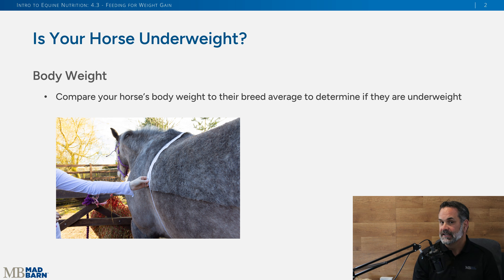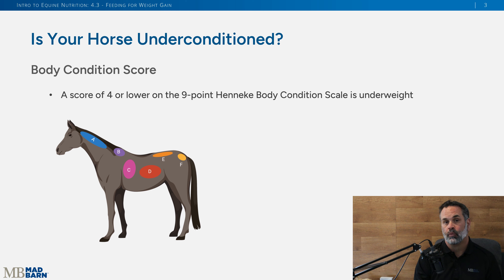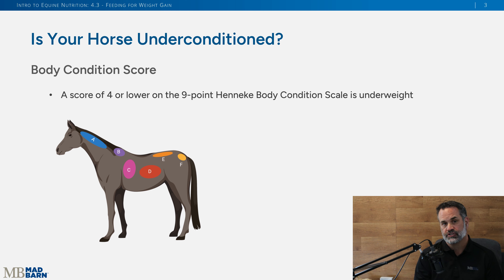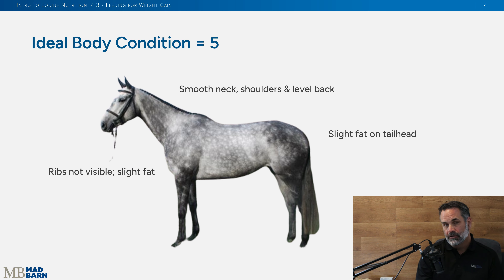Compare that to breed averages to get an idea if your horse is in the normal range. Ideally, though, you would want to body condition score your horse, because that is the best way to determine condition or fat deposition on the horse's body. In this course we're going to use the Hennecke body condition scoring system, which is a one-to-nine point system that's pretty much the gold standard used around the world.